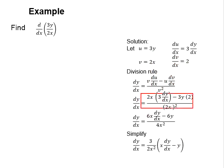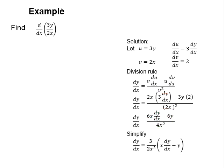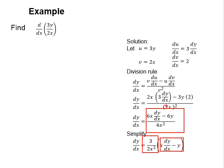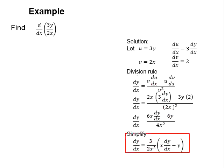Rearrange the functions and you will get this. These functions can be further simplified by taking out the common terms of 3 divided by 2x squared. What is left behind will be within the bracket. Your final solution will be this.